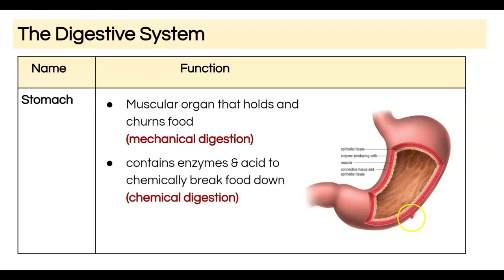In the stomach we also have special enzymes and hydrochloric acid that chemically break down food. Acids are powerful corrosive chemicals that will break down our food, and that's happening in our stomach. If you've ever vomited, you know it has a sour taste, which is largely due to the acidic content of your stomach. The details of these enzymes and acids will be expanded on in grade 11.